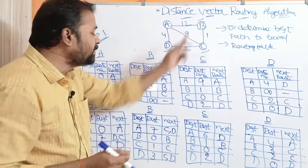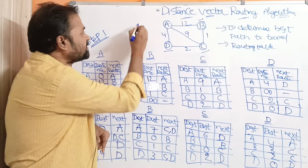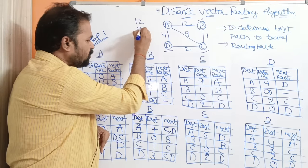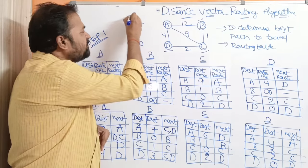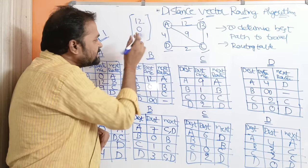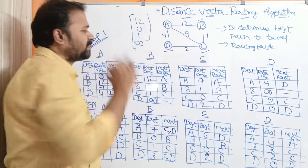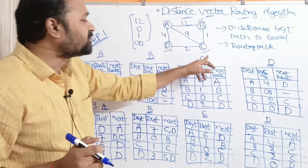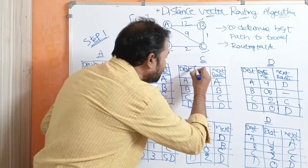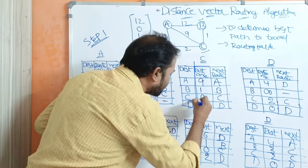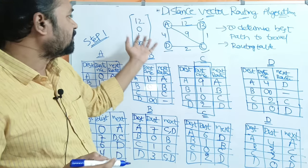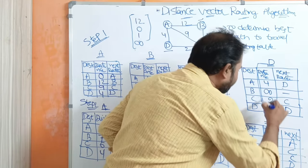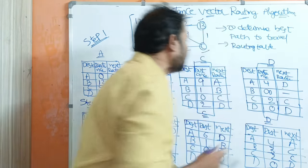If we consider B, its distance vector is 12, 0, 1, infinity. B will share only this distance vector with A. Likewise, C will share its distance vector with A, and D will share its distance vector with A.